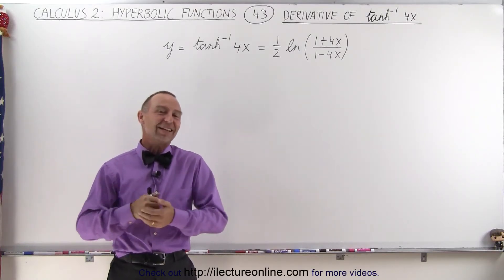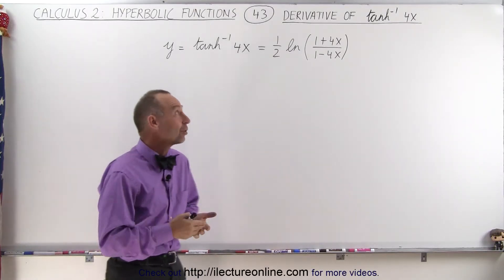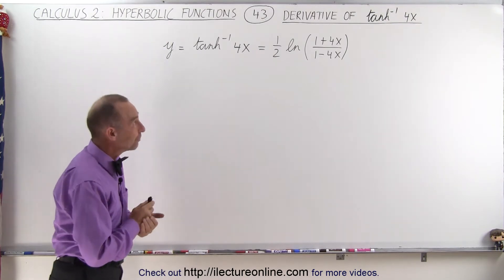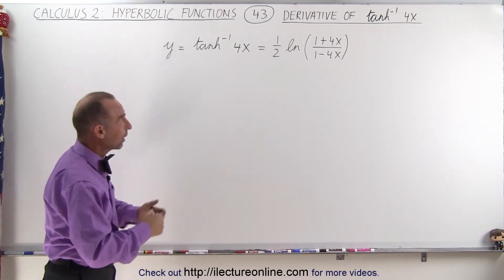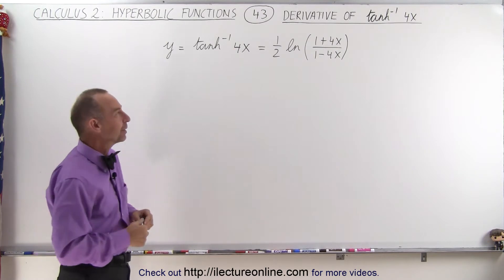Welcome to ElectronLine. Now let's try an example of taking the derivative, in this case, of the inverse hyperbolic tangent of 4x, to see how things would be a little bit different.